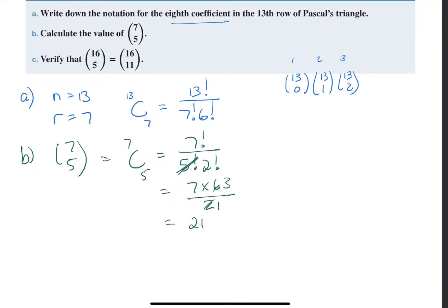In our last question that we're going to ask you, they ask us for factorial. So calculate, or now verify that sixteen choose five equals sixteen choose eleven.